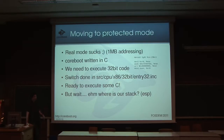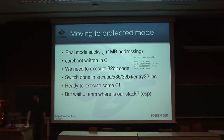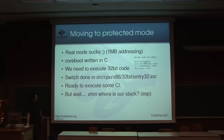Real mode is kind of derived from 8-bit computers, so we can address only 64 kilobytes in one segment and a total of one megabyte of RAM, which is not very nice because coreboot is written in C and we want to use GCC to compile the stuff. GCC on x86 mostly produces 32-bit code, so we need to switch to protected mode in order to execute 32-bit code. It's basically only a few instructions — we need to load some descriptor table, then toggle some bits, and that's it.